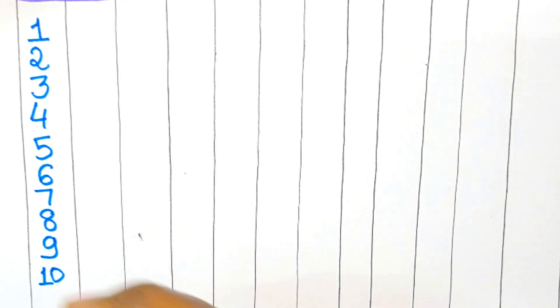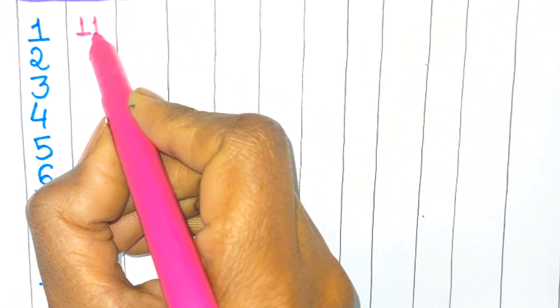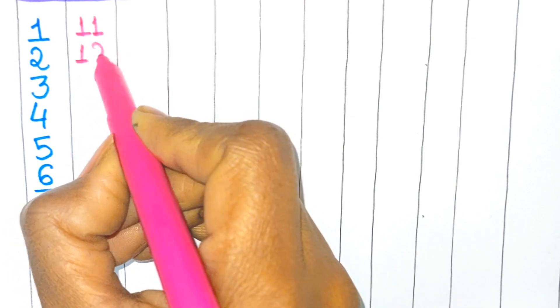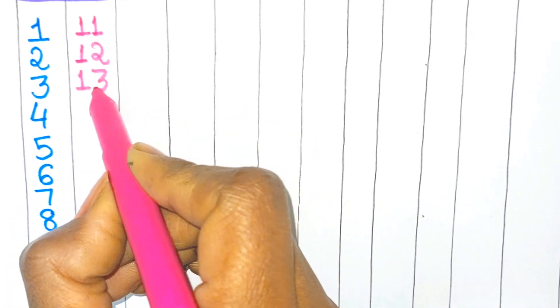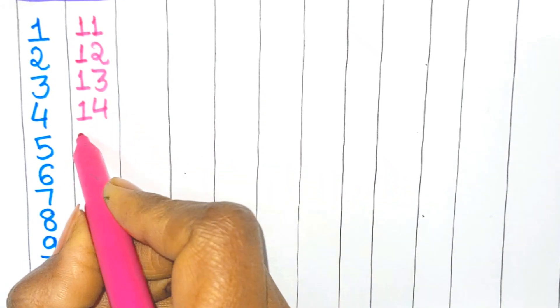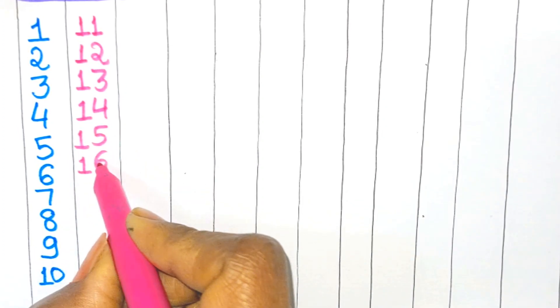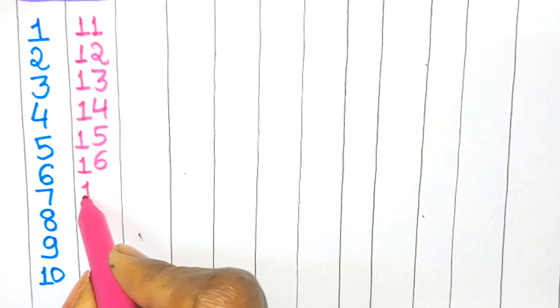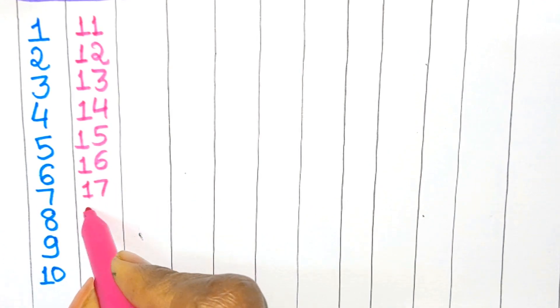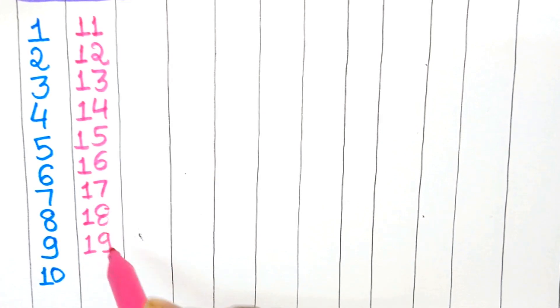One two - ten, eleven, twelve, it's thirteen - one three, thirteen, one four - fourteen, one five - fifteen, one six - sixteen, one seven - seventeen, one eight - eighteen, one nine - nineteen, and two zero is twenty.